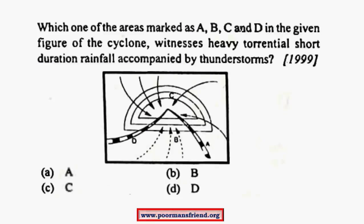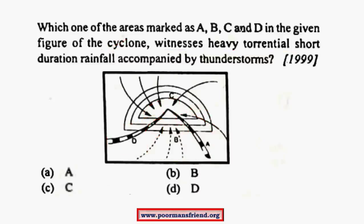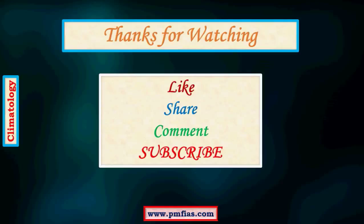Now let us look at a question: Which area, marked as A, B, C, or D in the figure of the cyclone, witnesses heavy torrential short-duration rainfall accompanied by thunderstorms? From the figure, this is an example of an occluded front. The region of cold front, the region of warm front, and their convergence point where occlusion of air takes place — all are visible. The low pressure center has the maximum rainfall in the occluded front system with both cumulonimbus and nimbostratus clouds. The region pointed to by C will have the greatest amount of torrential rainfall.